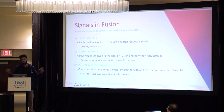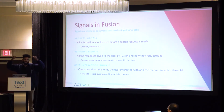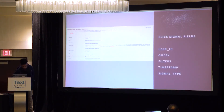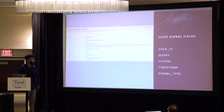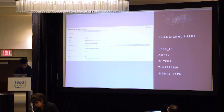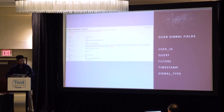These are the user interaction signals that help drive personalized search. The three types map to the improvements we need to make in relevancy. A signal contains fields like a user ID, a query, a filter, a timestamp, and a signal type. Timestamp is critical because when someone searches often matters as much as where they search from.